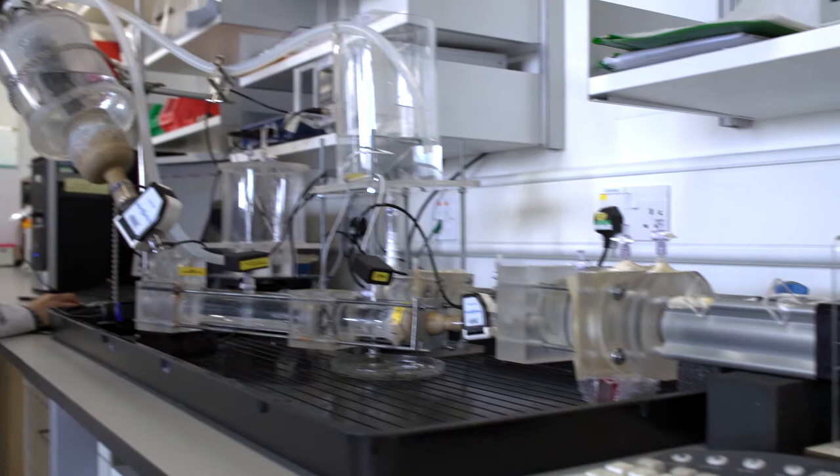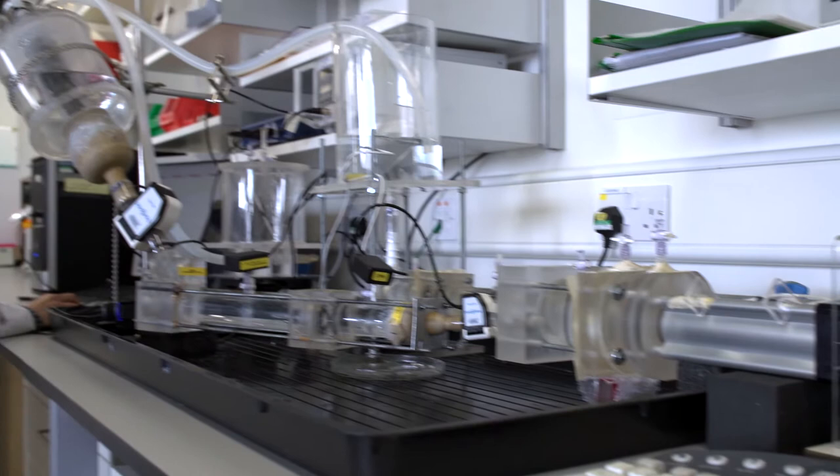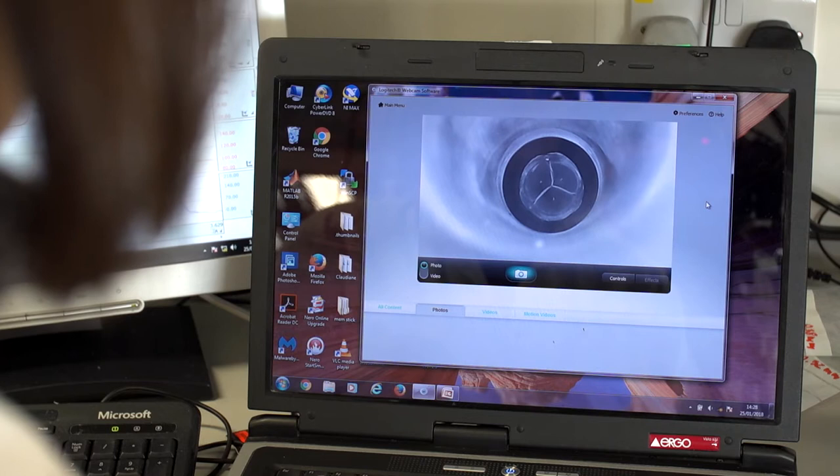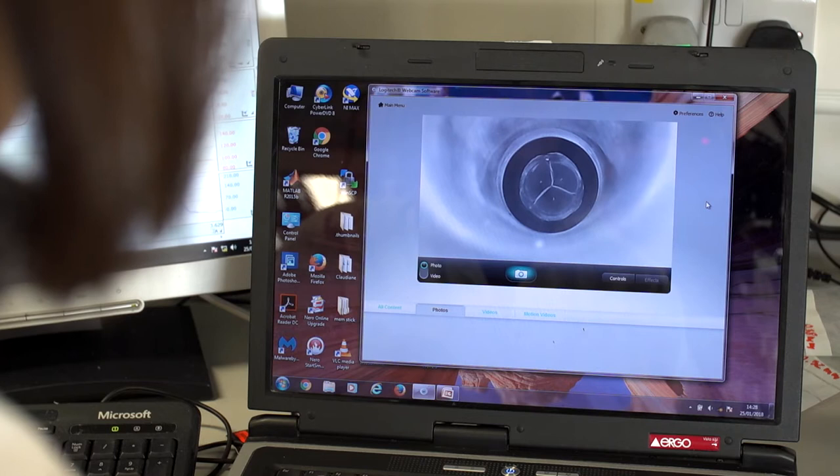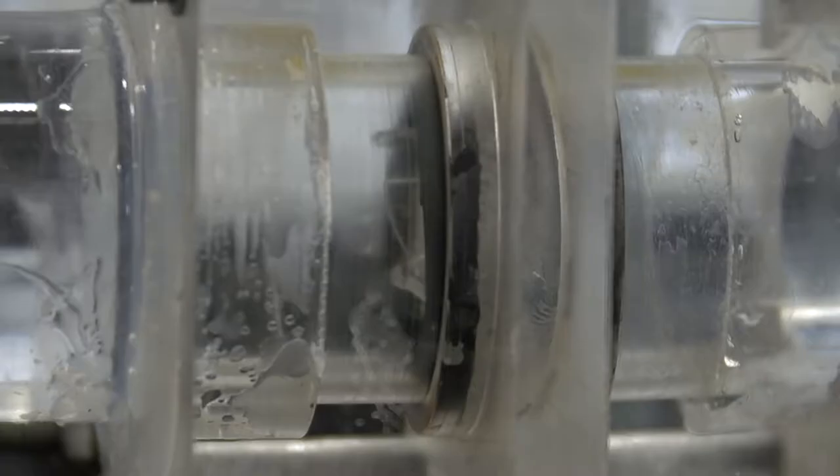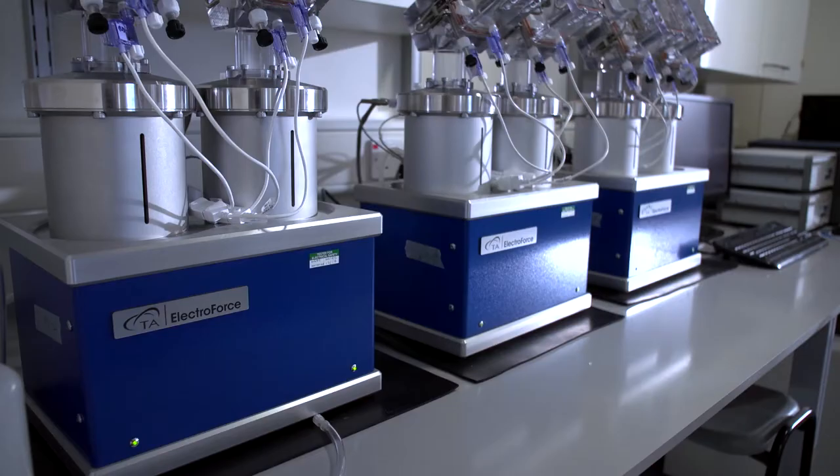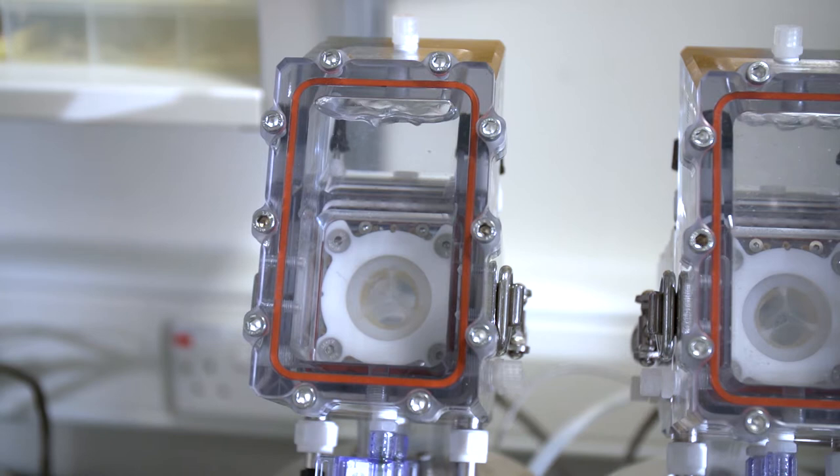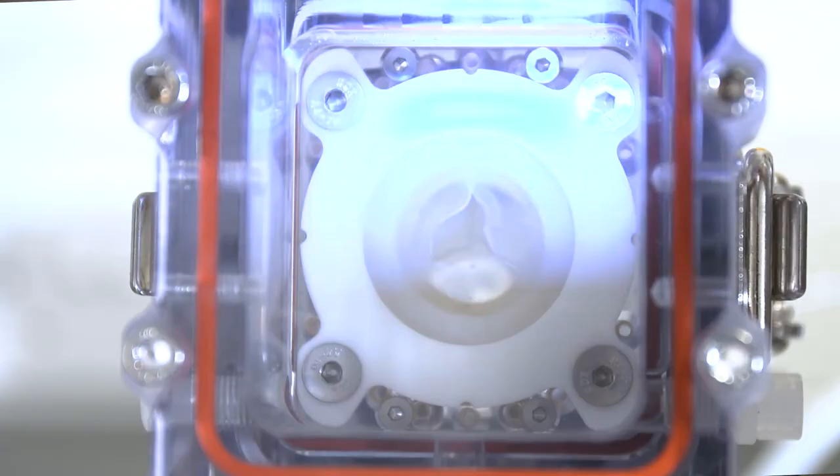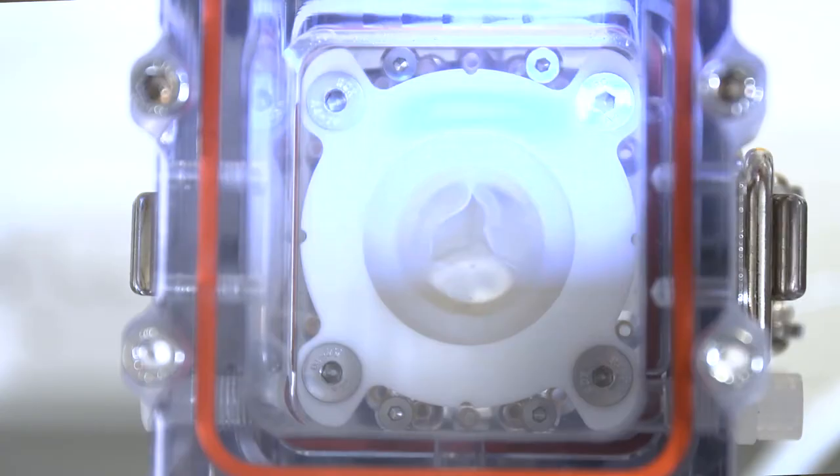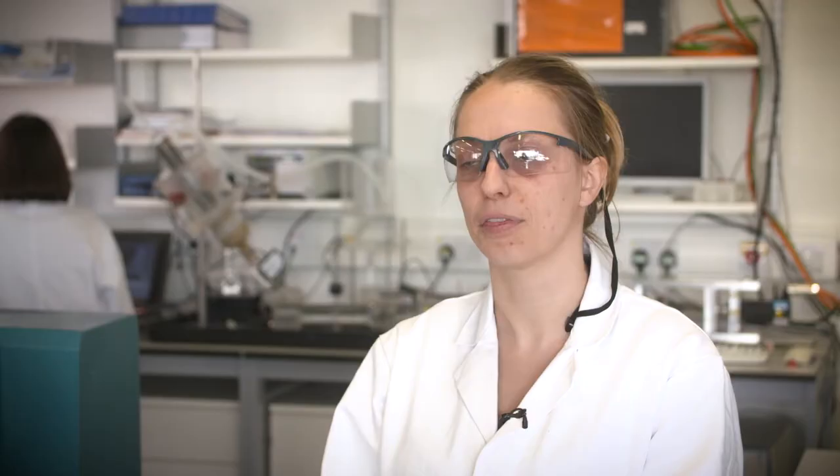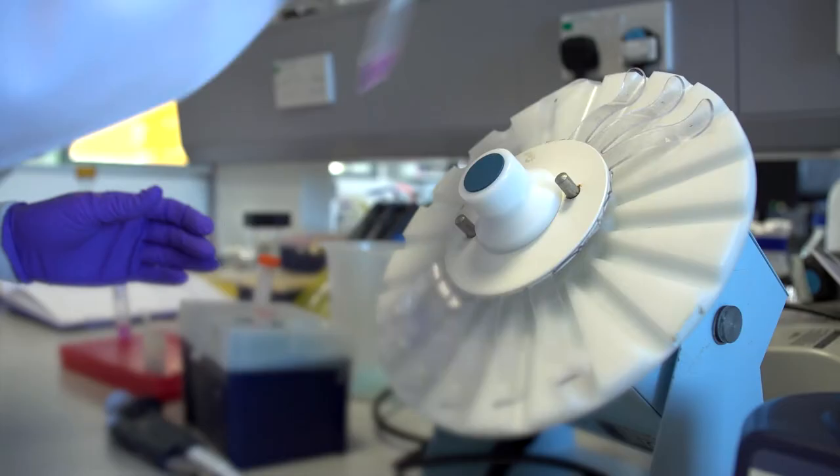So how we test the valve is we use firstly hydrodynamic testing in a pulse duplicator and then we can see how it performs in terms of how much it opens and how well it closes. Once we know that we're happy with the hydrodynamic performance, we need to see how long the valve actually lasts. We do that in an accelerated test called a fatigue tester where we rapidly open and close at a high frequency and measure the performance and count the number of cycles that it has performed.